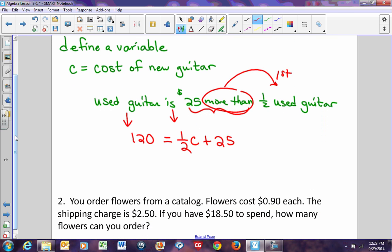So now we have a two-step equation. We're going to solve it. First thing we're going to do is get rid of any addition or subtraction, so I'm going to subtract 25. 120 minus 25 is 95, so 95 equals 1/2 c. To get c by itself, we need to get rid of the multiplication by 1/2. So the reverse of that is divided by 1/2, or multiplying by 2. So if we multiply both sides of this equation by 2, these twos will cancel, leaving c equals 95 times 2 is $190. Since this is a word problem, it must be written in a complete sentence. A new guitar costs $190.